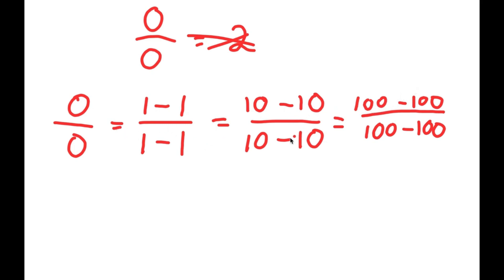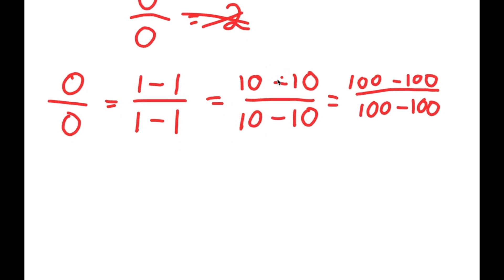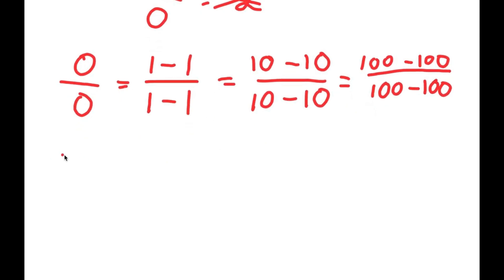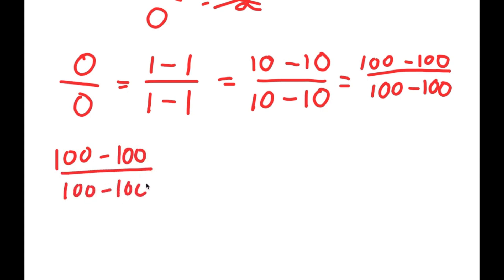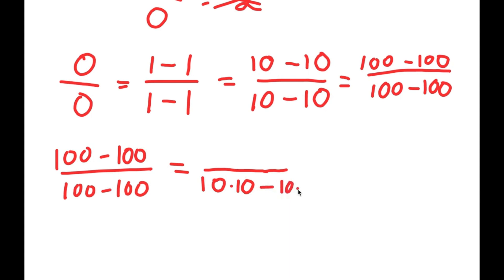So, because all of this is true, now I can start making things a little more complicated. Let me rewrite this: I have 100 minus 100 over 100 minus 100. Now, 100 is the same thing as 10 times 10. So for my denominator, I'm going to write this as 10 times 10 minus 10 times 10.